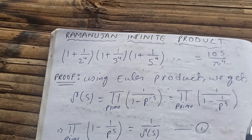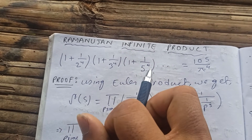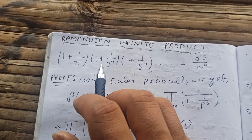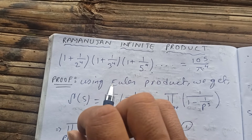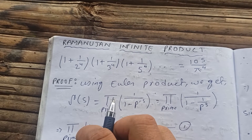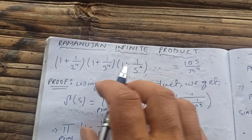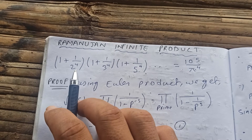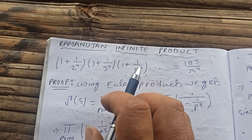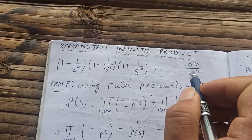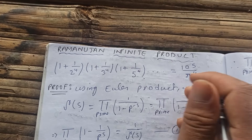Hello guys, thank you so much for watching my video. Today we are going to see a Ramanujan infinite product. You can find all these types of questions in the Ramanujan notebook — I've taken it from there. So we're trying to evaluate: the product of (1 + 1/2⁴)(1 + 1/3⁴)(1 + 1/5⁴) and so on, which equals 105/π⁴.